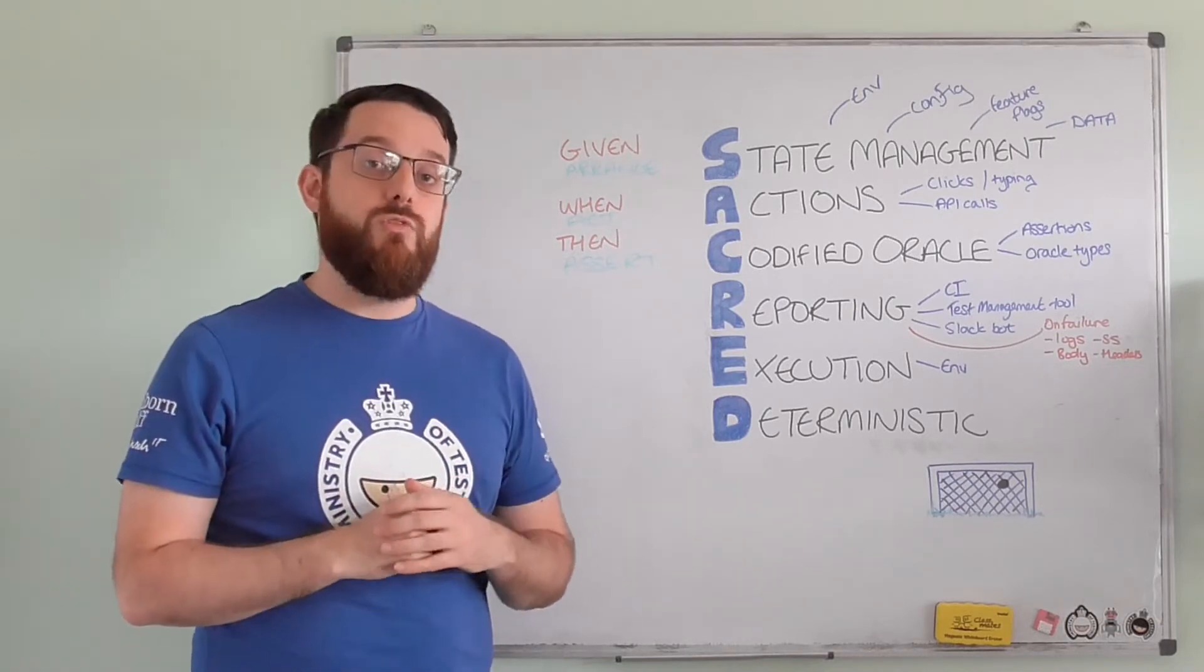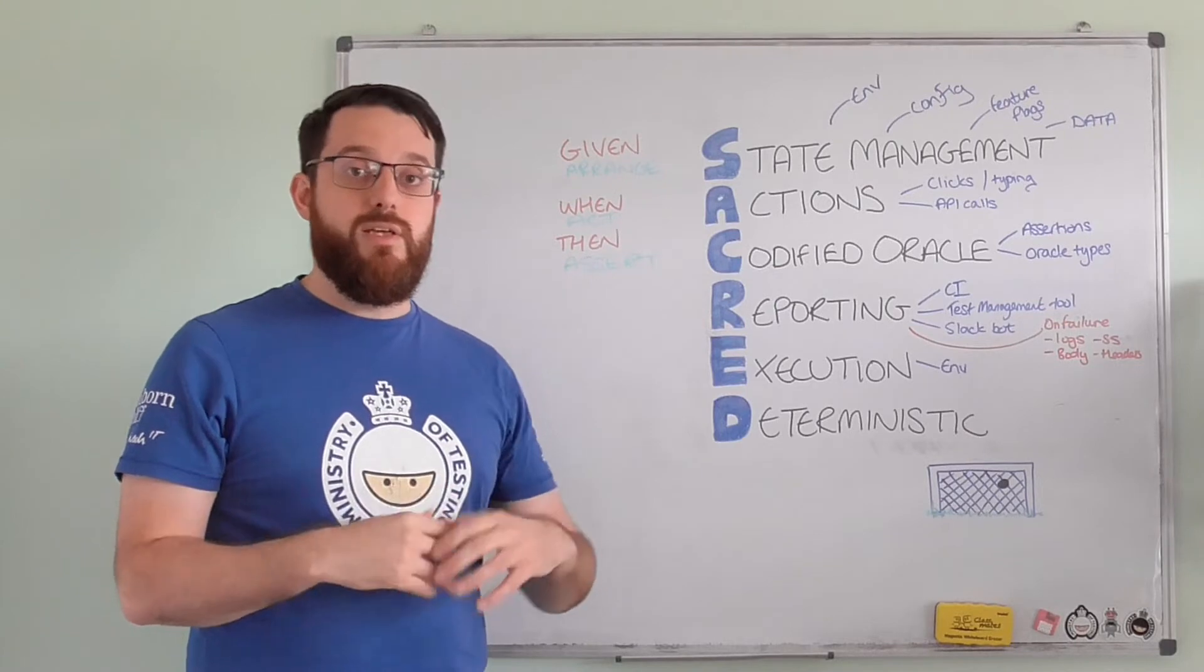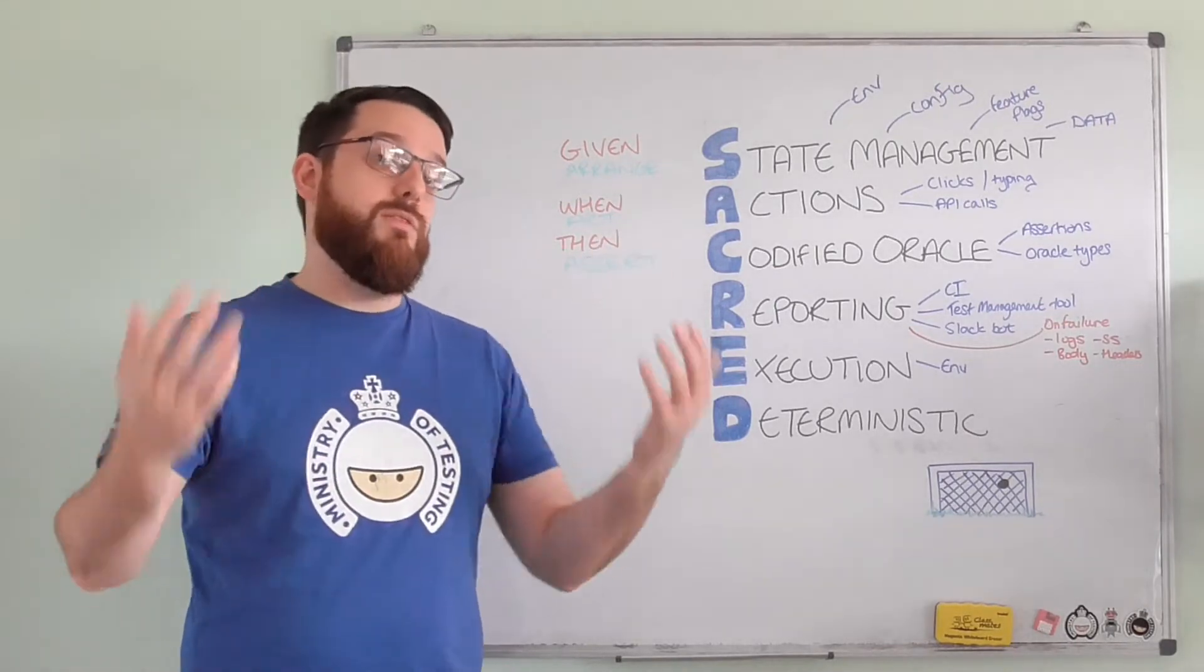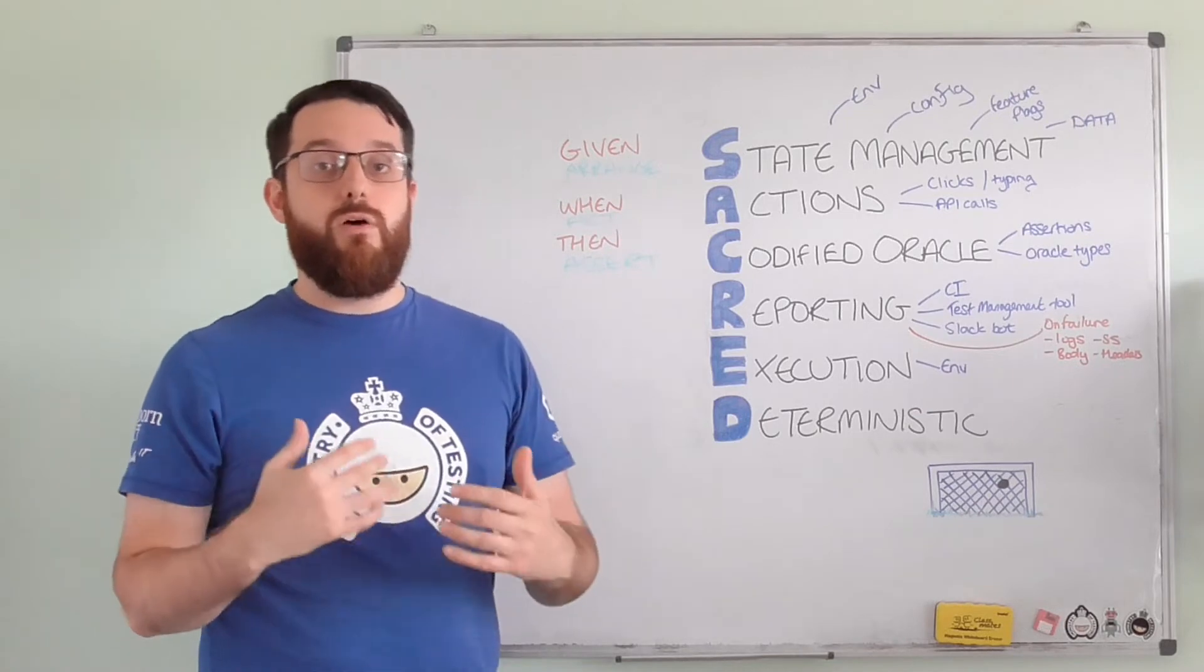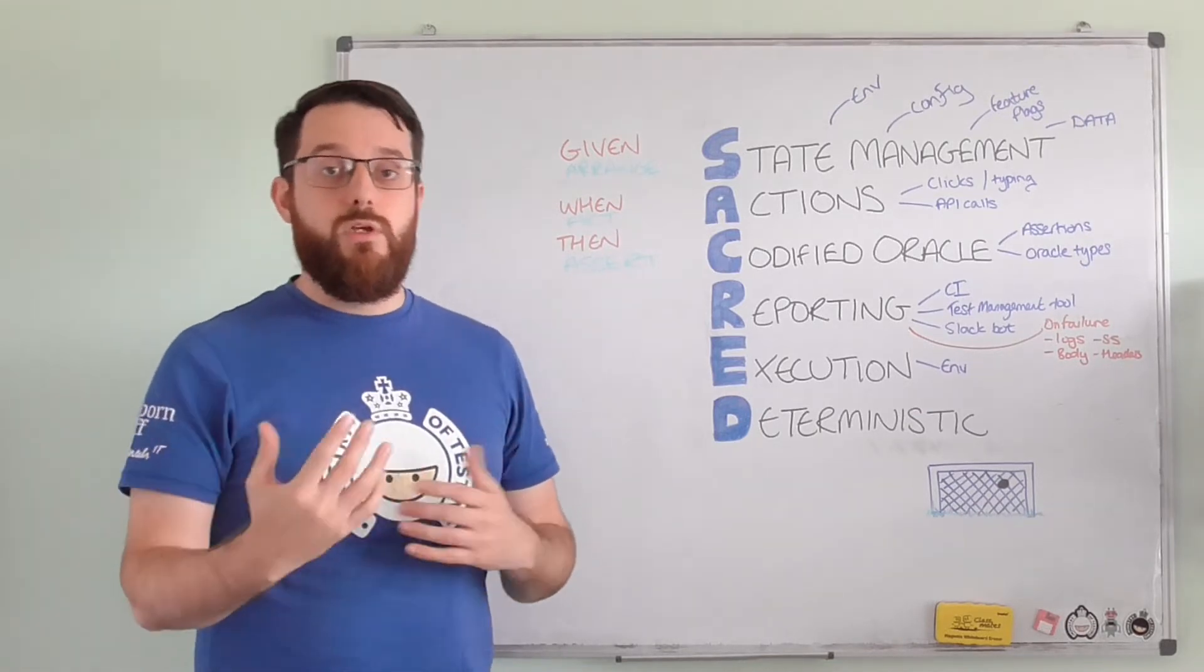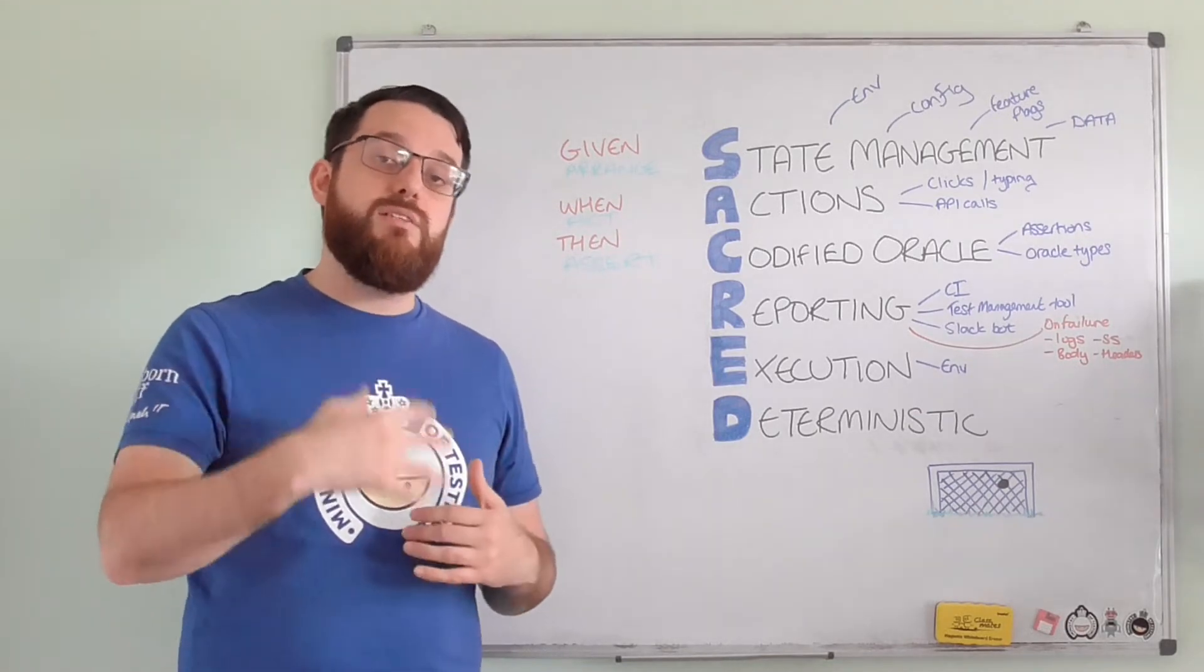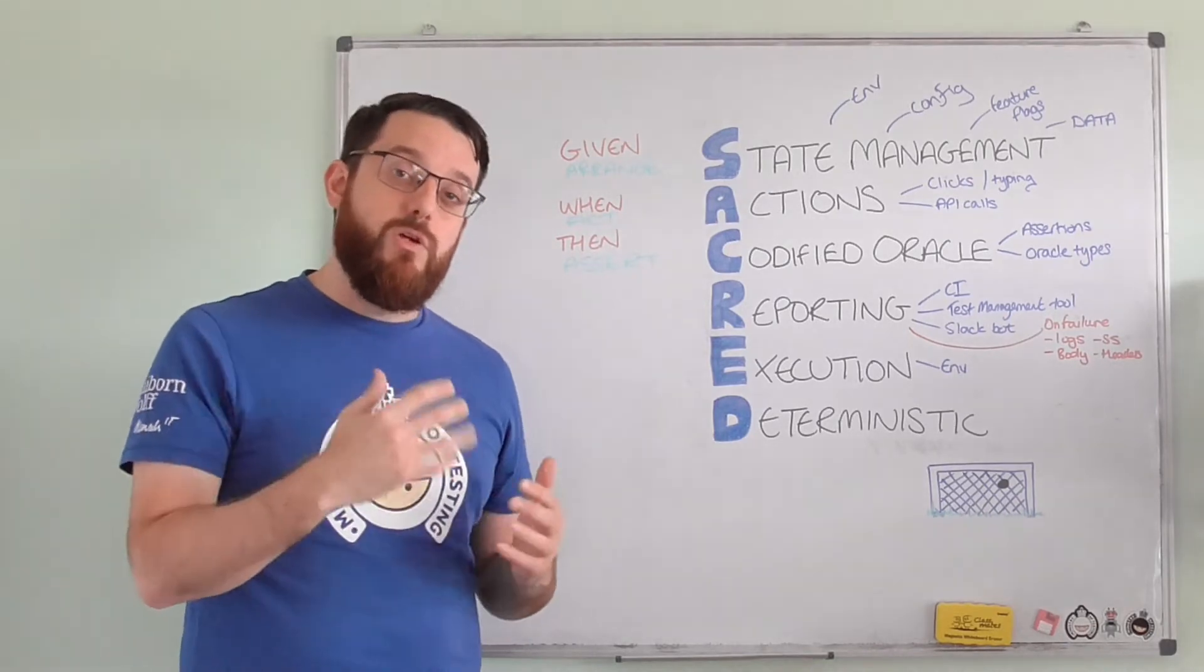Therefore, it's very important to create a very good assertion based on understanding the oracles that you used. Yes, there's some text on the screen and it's got the right price, but is it the right font? Is it the right color? Is it in the right part of the screen? The API returned these values, but did it also not return these other values?